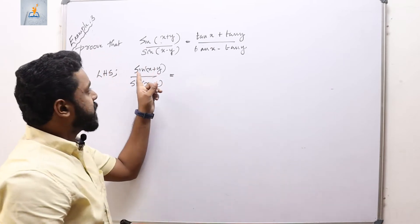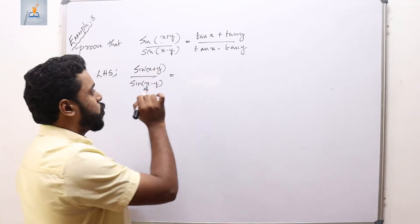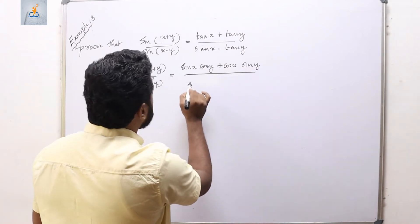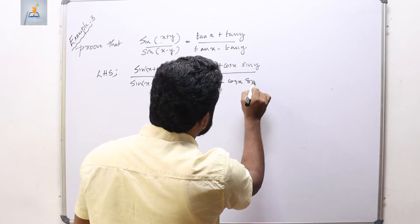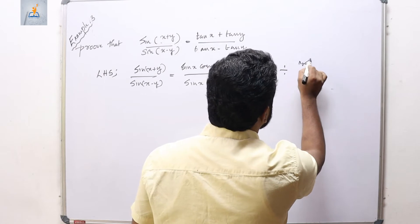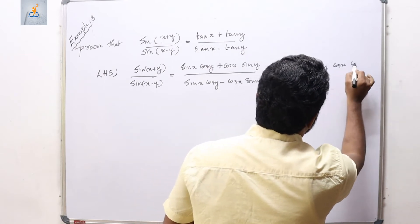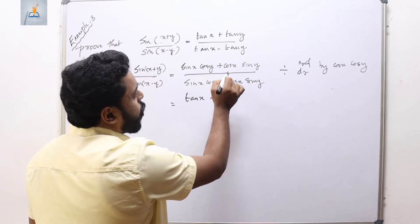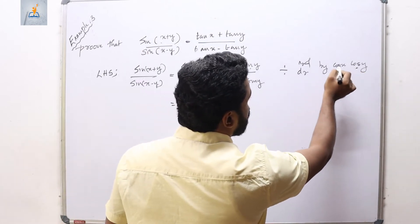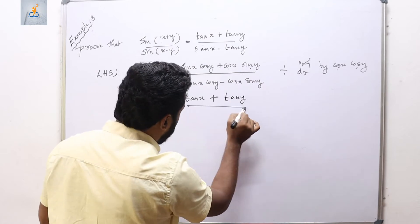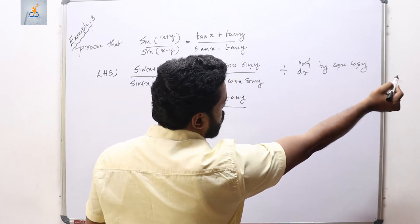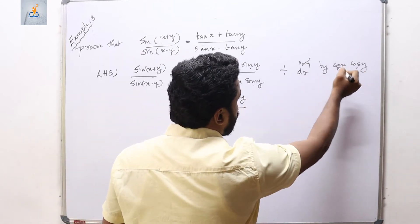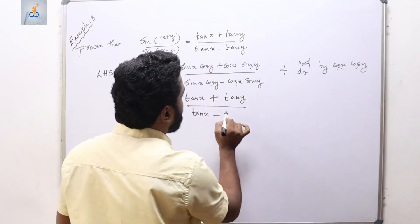The LHS becomes (sin x·cos y + cos x·sin y)/(sin x·cos y − cos x·sin y). Dividing numerator and denominator by cos x·cos y: cos y cancels from sin x terms leaving tan x, and cos x cancels from sin y terms leaving tan y. So we get (tan x + tan y)/(tan x − tan y), which is the required RHS. Hence LHS = RHS and the result is proved.